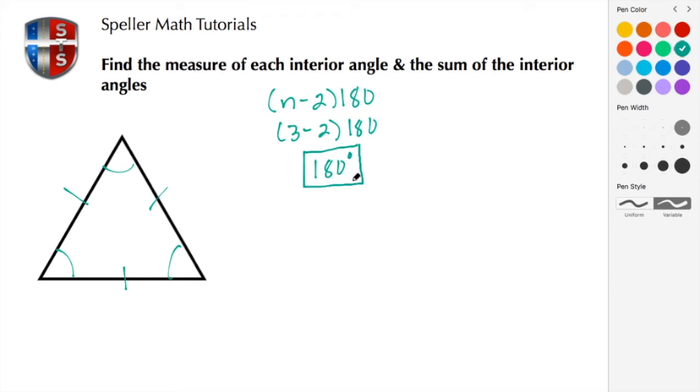Now to find the measure of each one of these individual angles, we need to divide that entire sum, 180 degrees, by 3. Well, 3 goes into 180 sixty times, leaving us with 60 degrees. So each angle is 60 degrees.